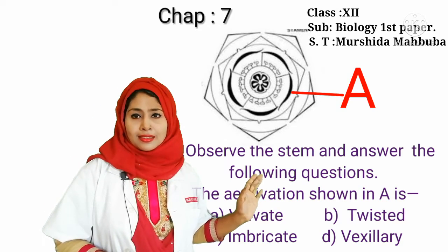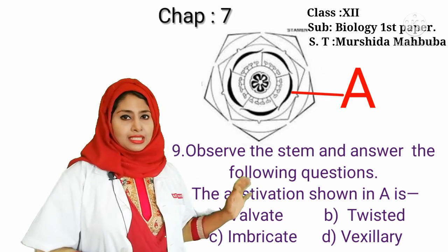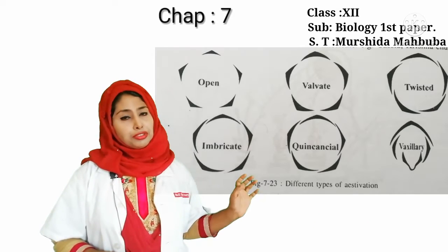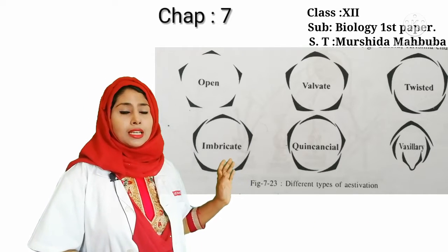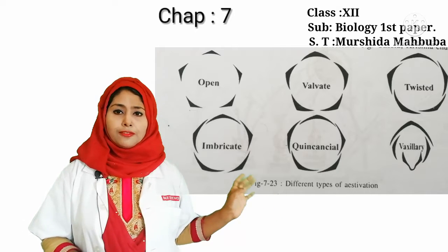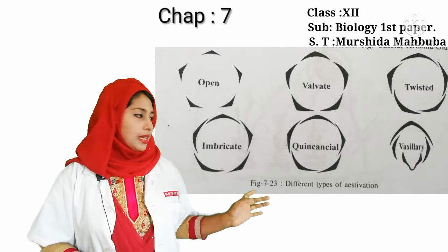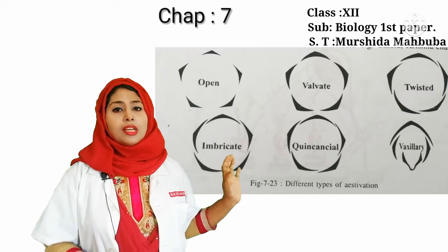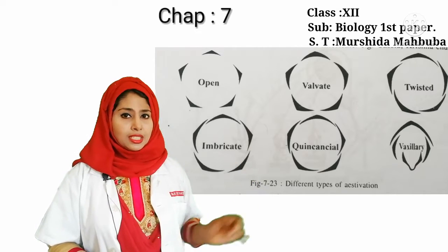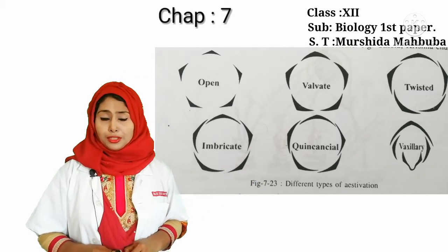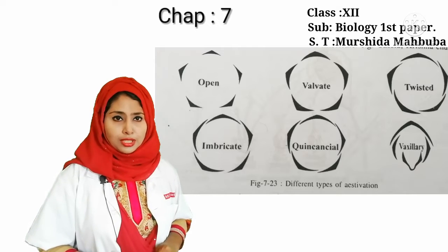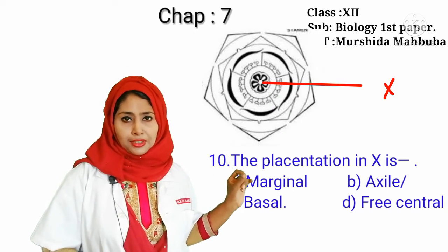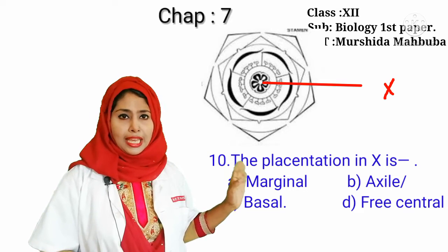Dear students, you have to memorize the definition of imbricate aestivation, the definition of valvate aestivation, the definition of quincuncial aestivation, and valvate twisted aestivation. Also in this floral diagram, the placentation is axile.